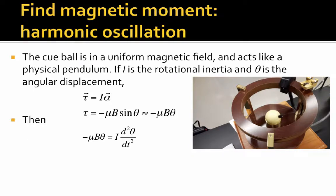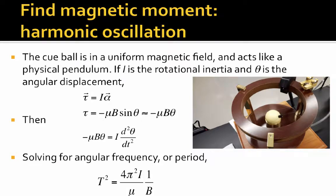We put that together, as you do in mechanics many times, and we get minus μB θ equals I d²θ/dt². Now, using that, we can find the angular frequency of the object, and hence the period. And so the period becomes T² equals 4π² I over μ times 1 over B.